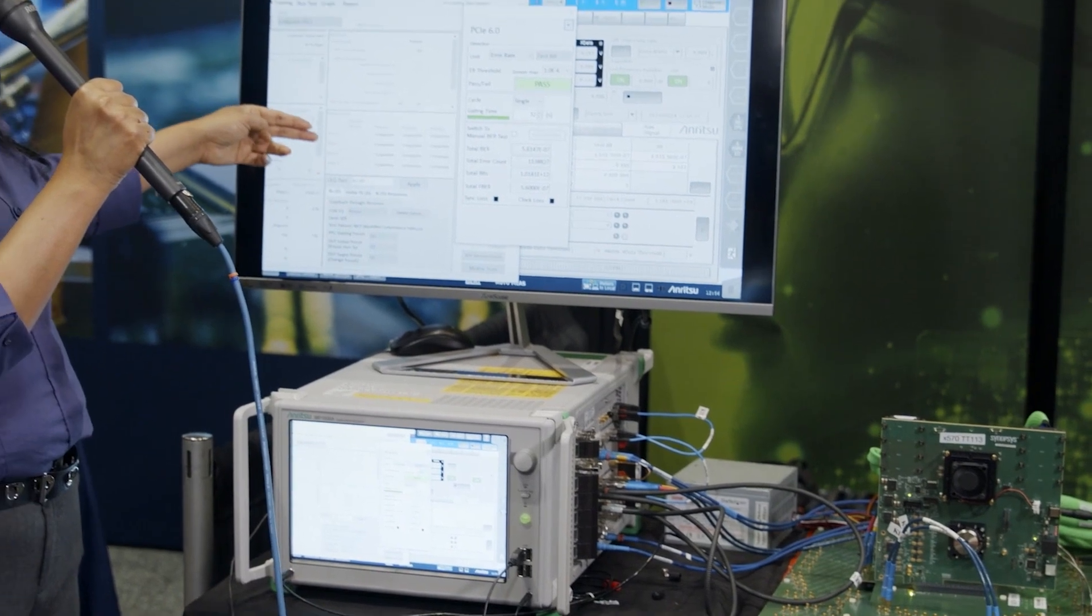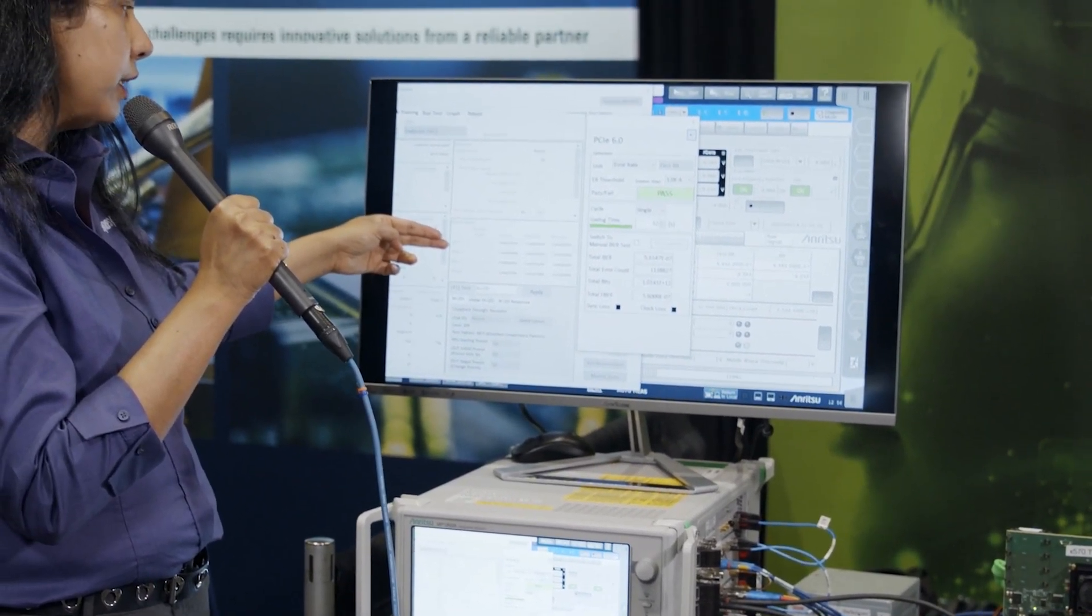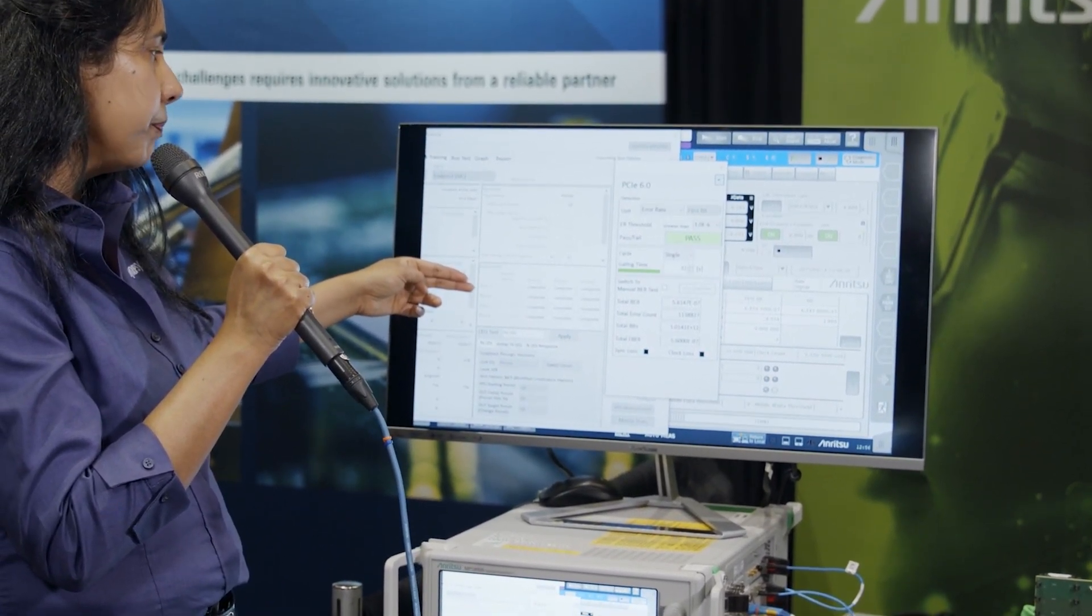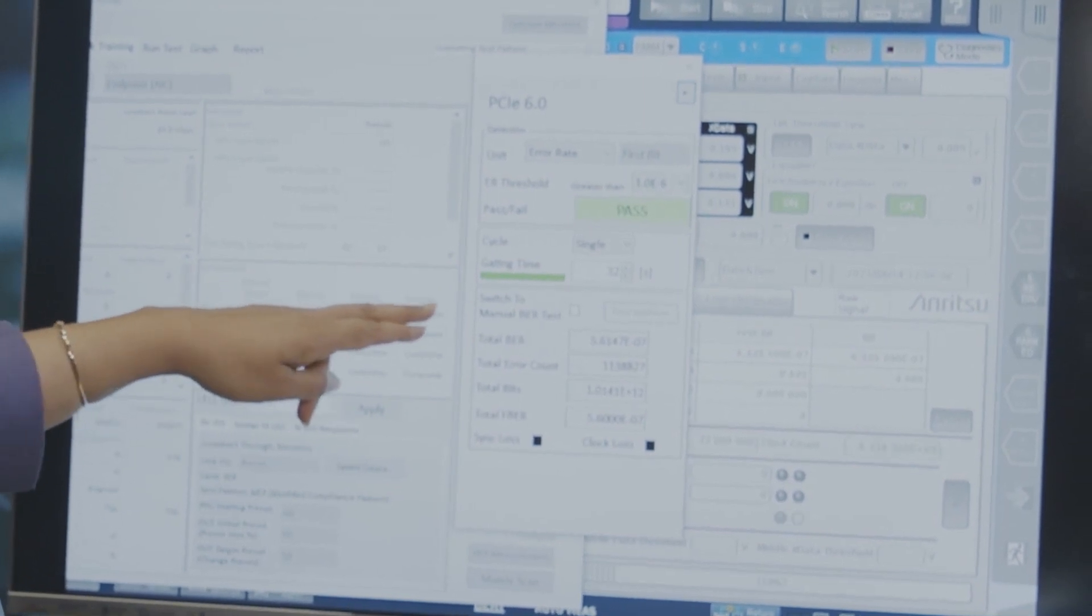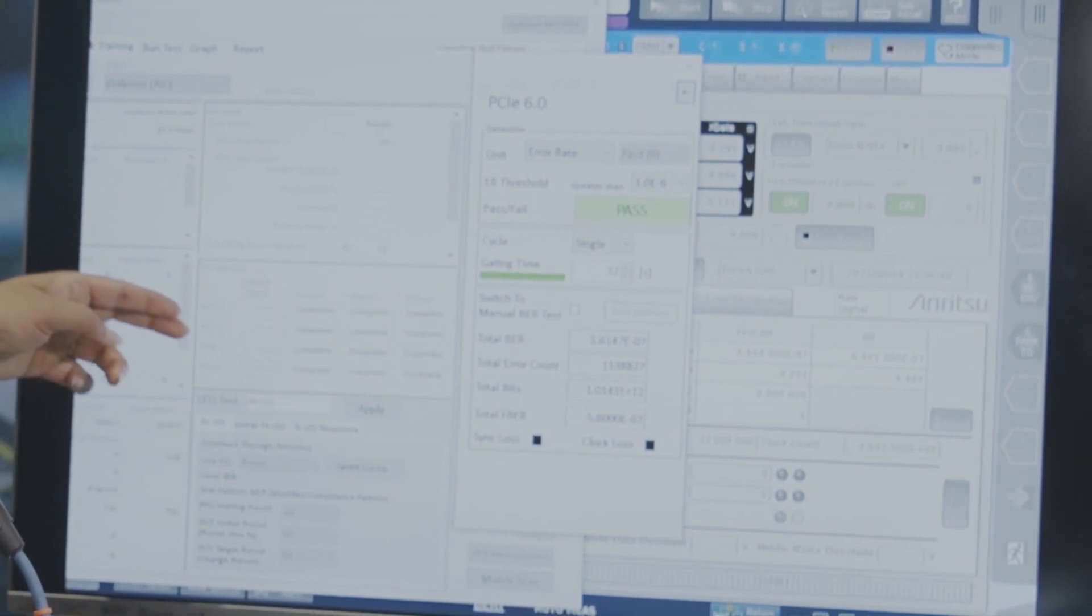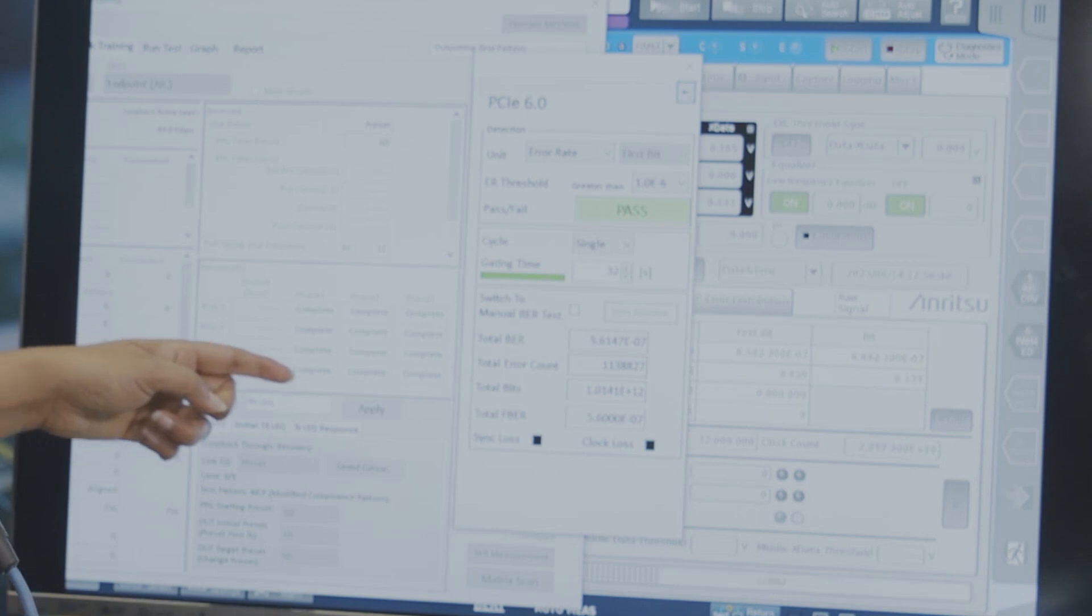As you can see in the GUI, it starts from Gen 3 showcasing Phase 1, Phase 2, Phase 3 equalization completed. Same as Gen 4, Gen 5, and finally Gen 6. As you can see, Gen 6 all Phase 1, Phase 2, Phase 3, recovery EQ has been completed.